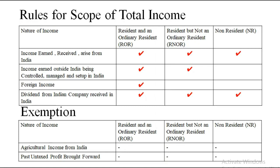Following are the few rules that you need to keep in mind before solving scope of total income. Under scope of total income, we have to segregate the amount and say it is taxable for whom — resident, ordinary resident, resident but not ordinary, or non-resident. Rule number one: if any income is earned, received, or arises from India, everyone will pay tax for it. You can see the tick marks — everyone has to pay tax.